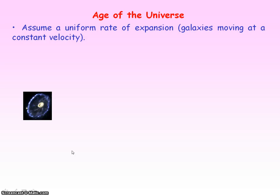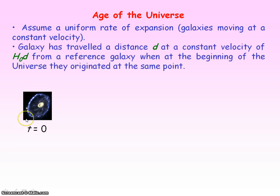To determine an approximate age of the universe, we assume a uniform rate of expansion. All the galaxies originated from the same point at the start of the universe. A galaxy has now travelled a distance d with a constant velocity that, according to Hubble's law, equals H₀d.